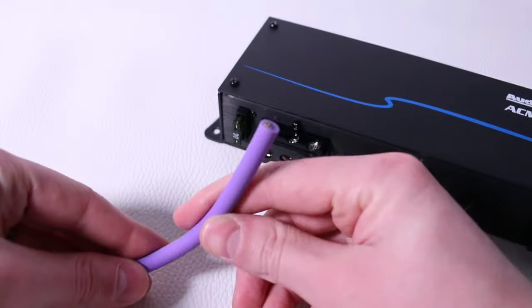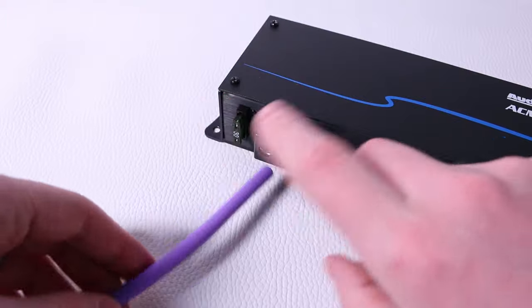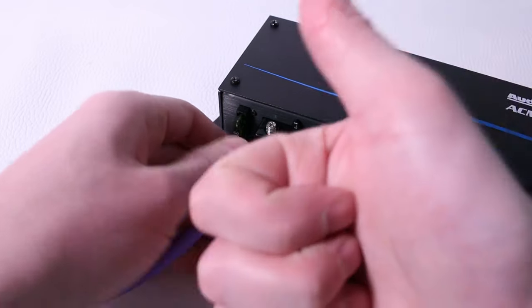When we install a custom car audio system, we need to strip away the wire insulation in order to connect different wires to the amplifiers and other devices within the system.